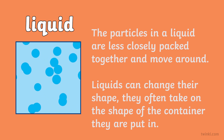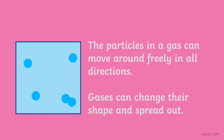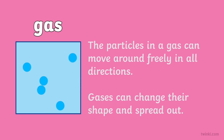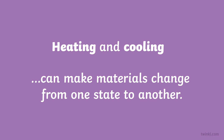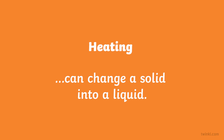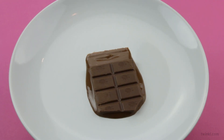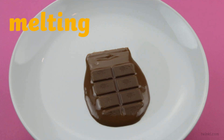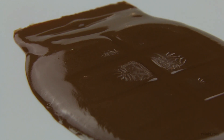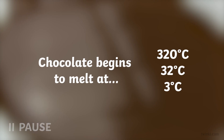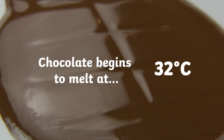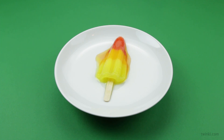Liquids often take the shape of the container they are put in. The particles in a gas can move around freely in all directions; gases can change their shape and spread out. Heating and cooling can make materials change from one state to another. Heating can change a solid into a liquid — melting.